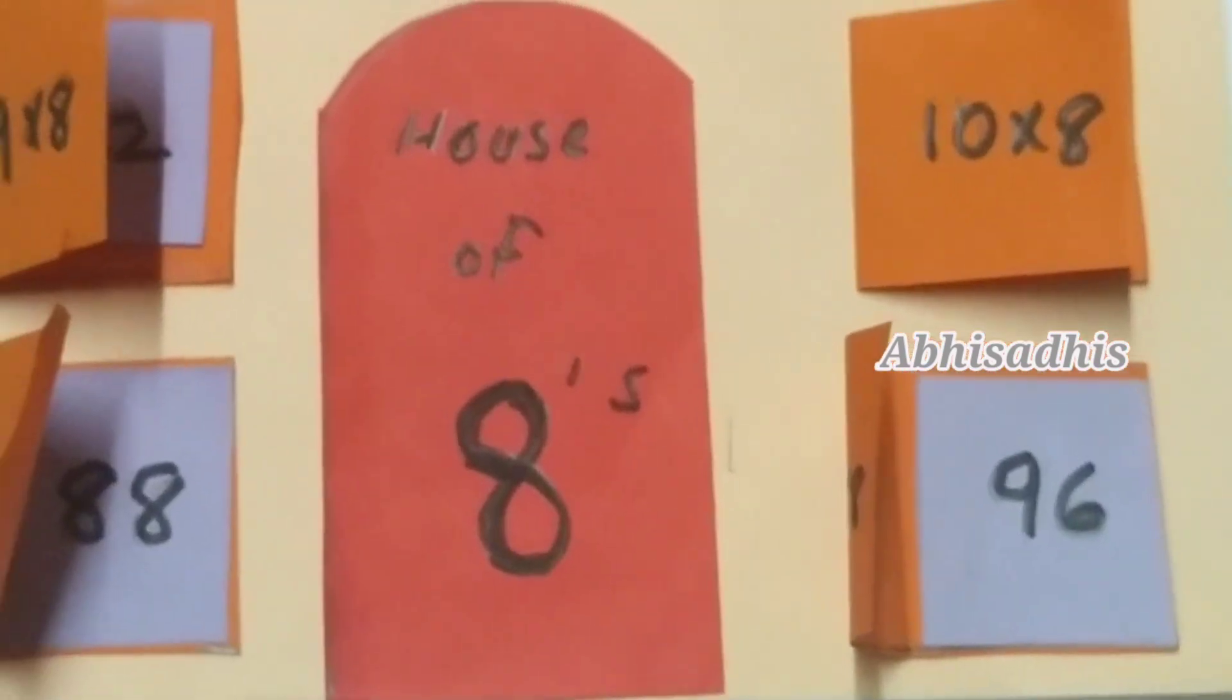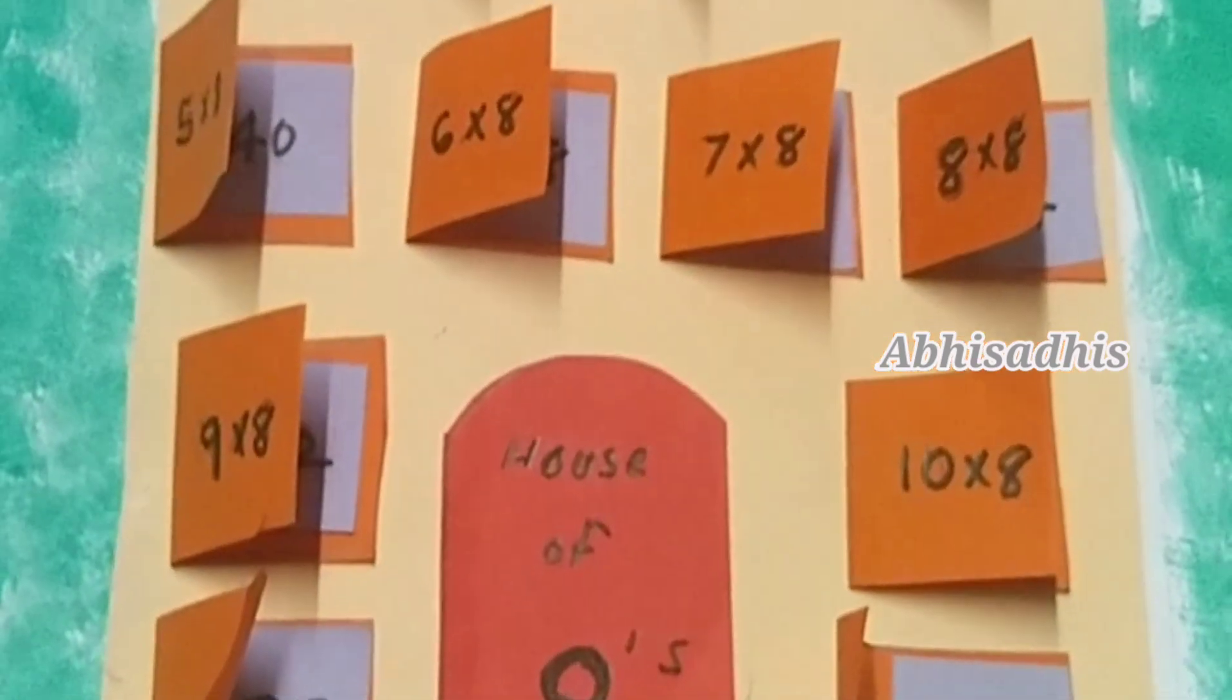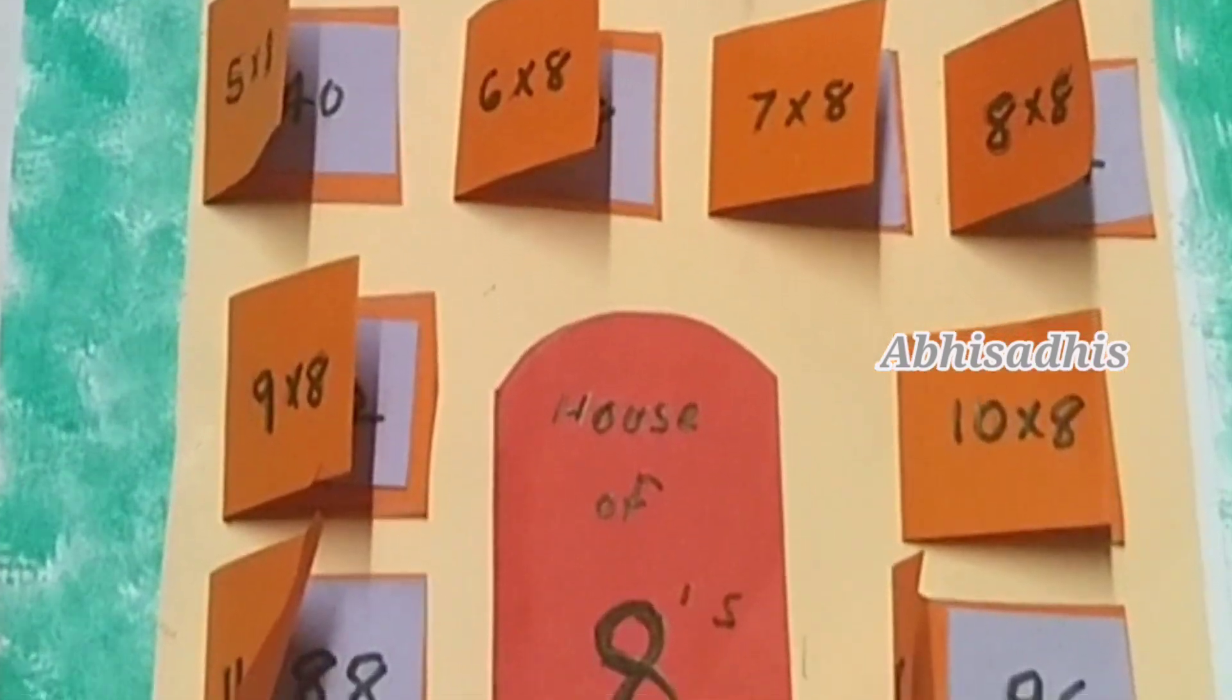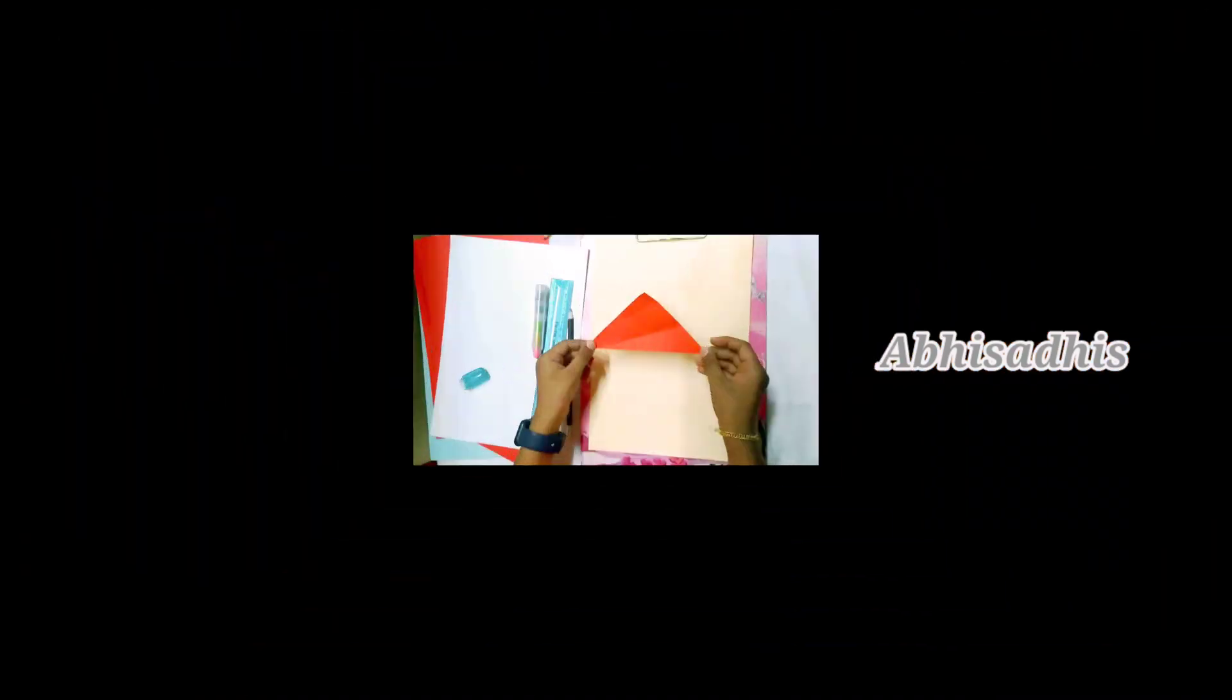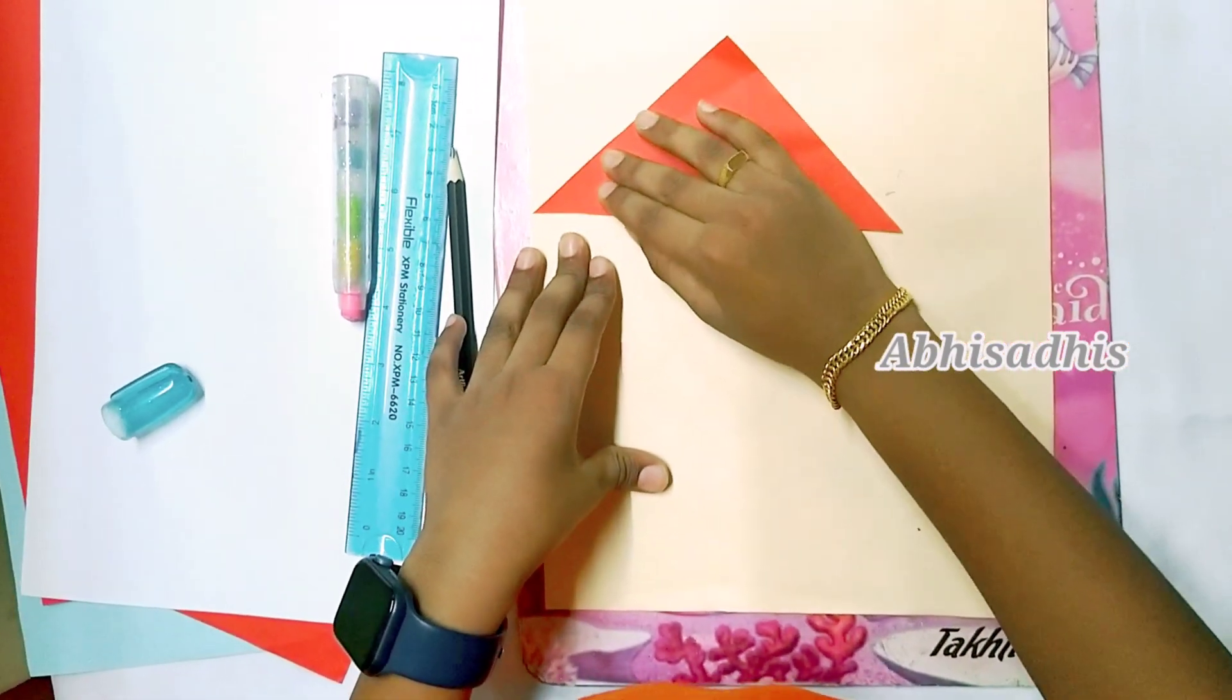In this video I will be showing you guys how to create a working multiplication house. I will be making the multiplication house of 8, but you can follow the same method to make the same of any digits. So without any further ado let's get making.